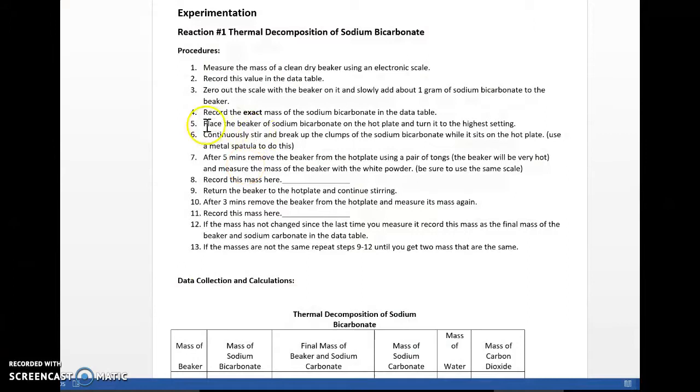Again, record the exact mass of the sodium bicarbonate in the data table. Now we're going to take the sodium bicarbonate, place it on our hot plate, and turn it up as high as it can go. Keep in mind, that hot plate is going to get very hot. The beaker is going to get very hot. Make sure that you're wearing your safety goggles.